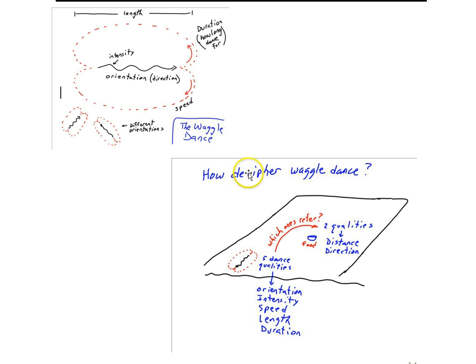And so that raises the puzzle: How do we decipher the waggle dance? Again, down here we have some characteristics of the dance, and what we want to do is figure out which of these characteristics is somehow carrying information about the distance and direction to food nearby the hive.